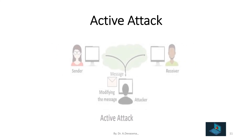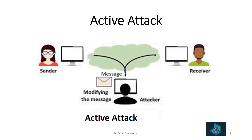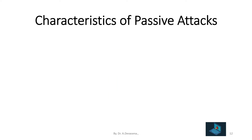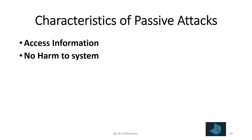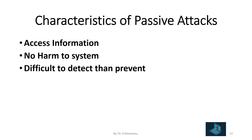In the representation of active attacks, a sender sends information to the receiver, but the active attacker receives the message sent by the sender, modifies it, and then sends the modified message to the receiver. This is represented as an active attack. Characteristics of passive attacks: they access information, cause no harm to the system, and are difficult to detect than prevent. They pose a threat to confidentiality.